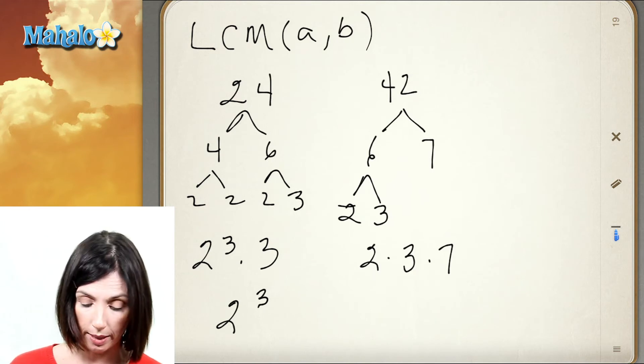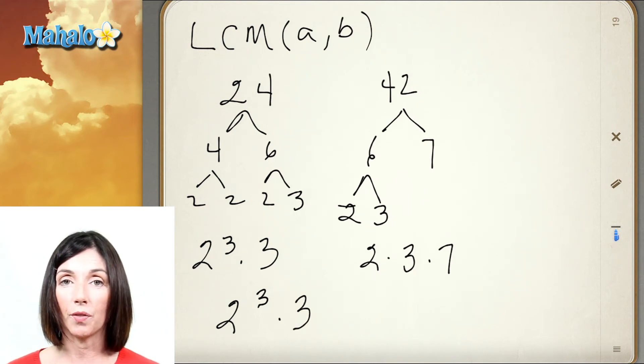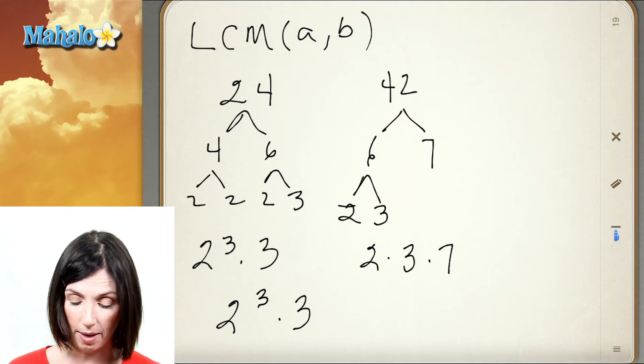We have a 3 in both so I've got to take that. Now we don't have a 7 in the prime factorization of 24 but we do have it in 42 so we have to include it. We have to take the largest power of anything that appears in either one.